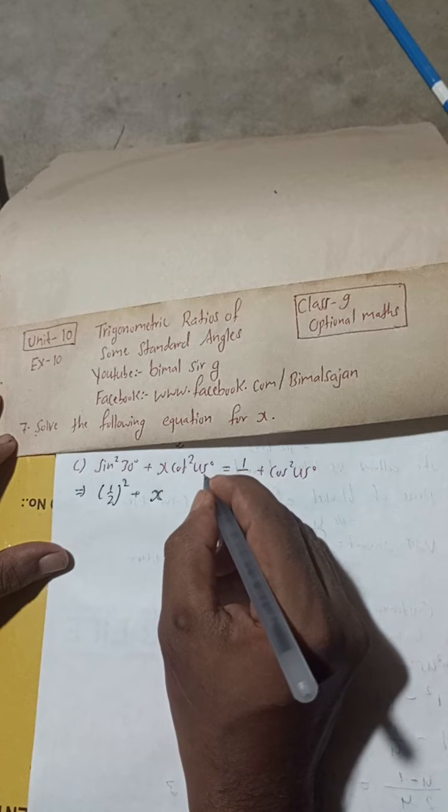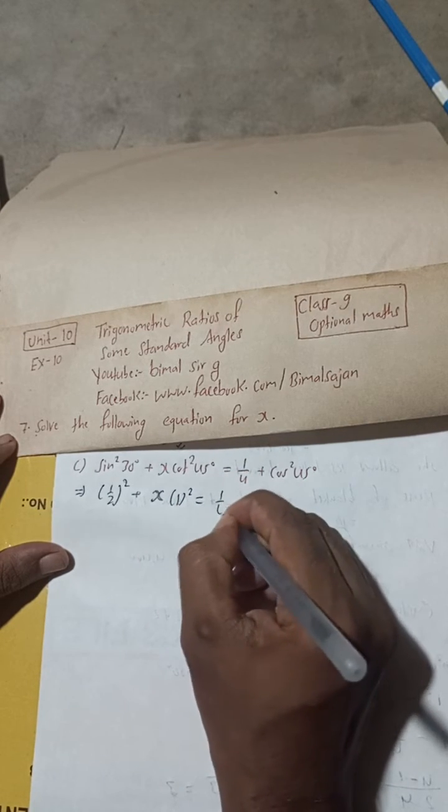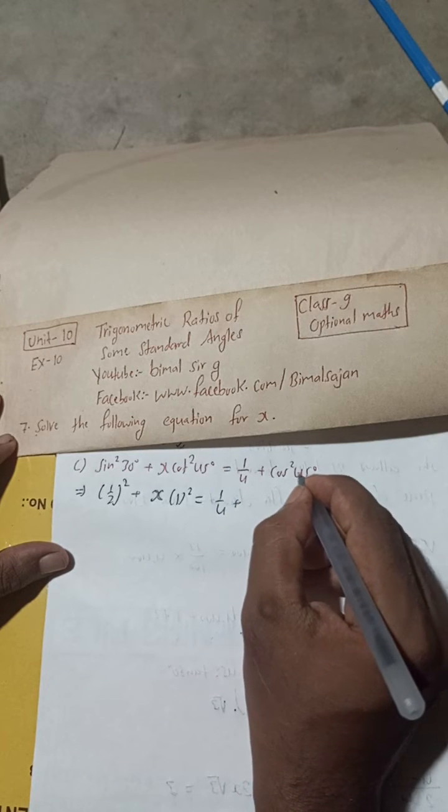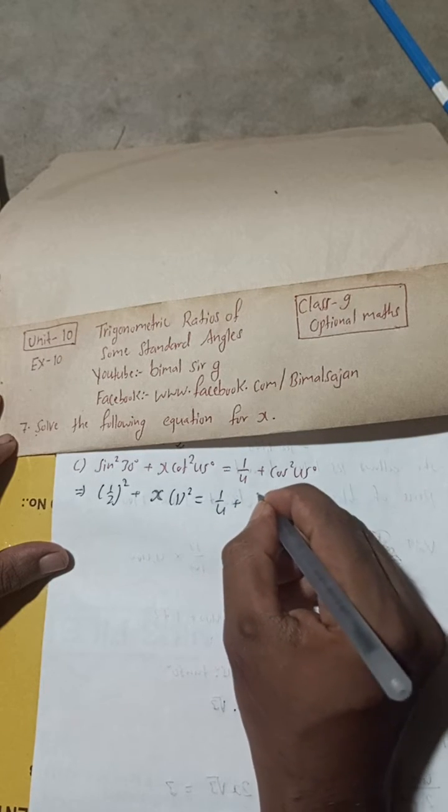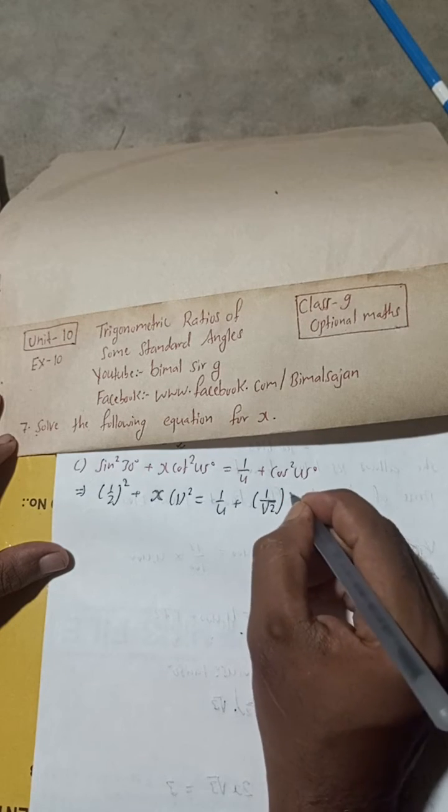And cot square 45, so cot 45 is 1. And there is square, so square is equal to 1 by 4 plus. So cos square is 45 degree. Cos 45 degree value is 1 by root 2. And there is square, so square.